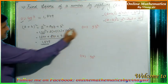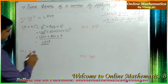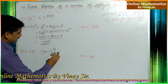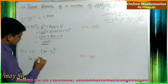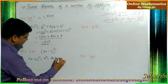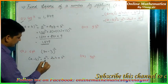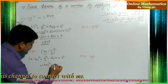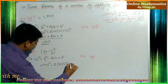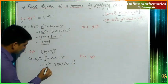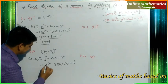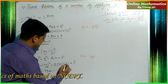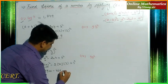In the same way, we apply (a-b)² to find 67². 67² can be written as (70-3)². We know (a-b)² = a² - 2ab + b². Here a = 70 and b = 3, so we get 70² - 2×70×3 + 3², which gives 4900 - 420 + 9.